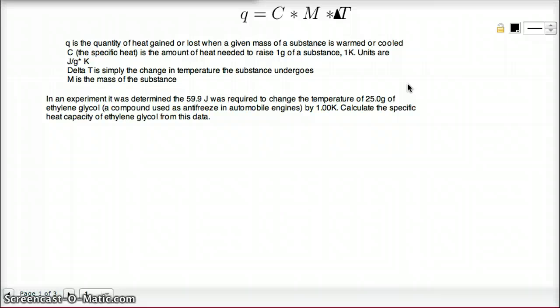And to find Q, we need to know three things. We need to know the specific heat, which is the amount of heat needed to raise one gram of a substance one kelvin or one degree Celsius. And the units of this are joules per gram kelvin or joules per gram degree Celsius.